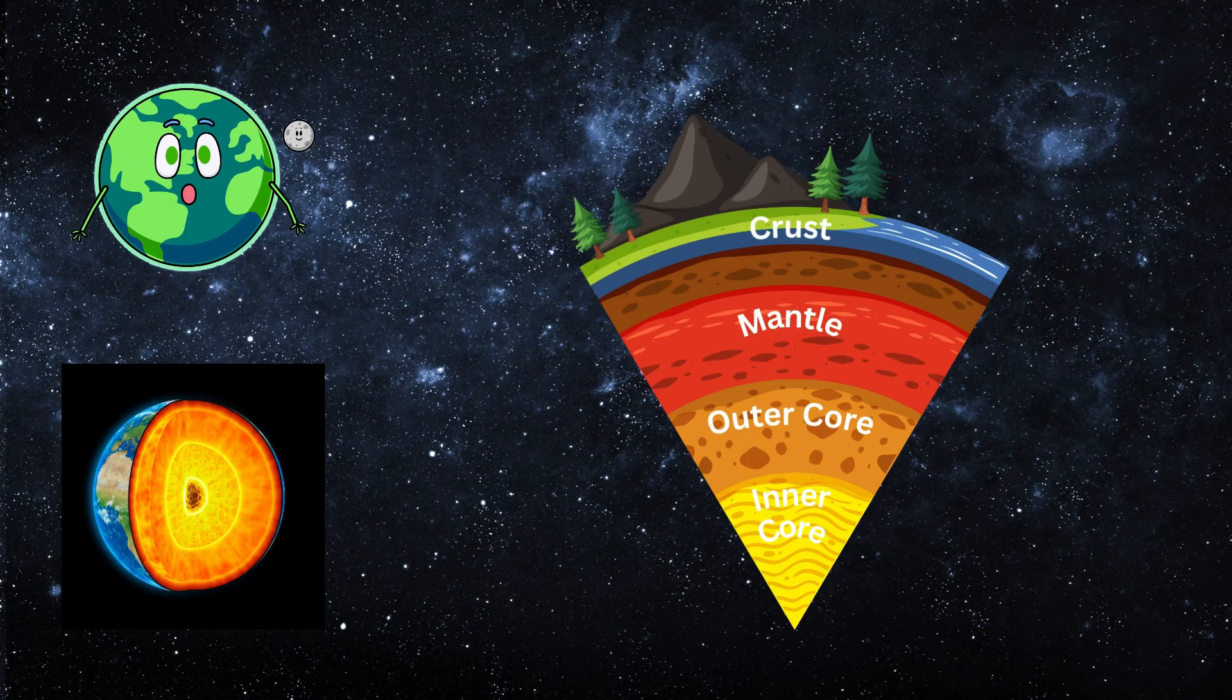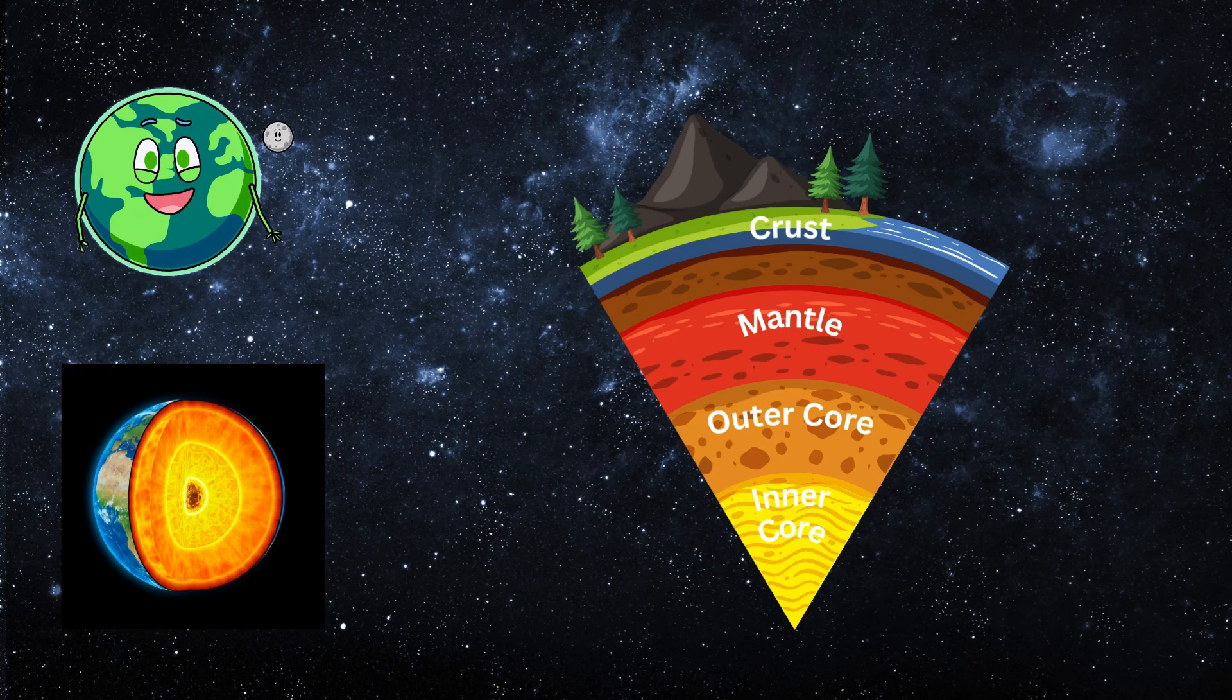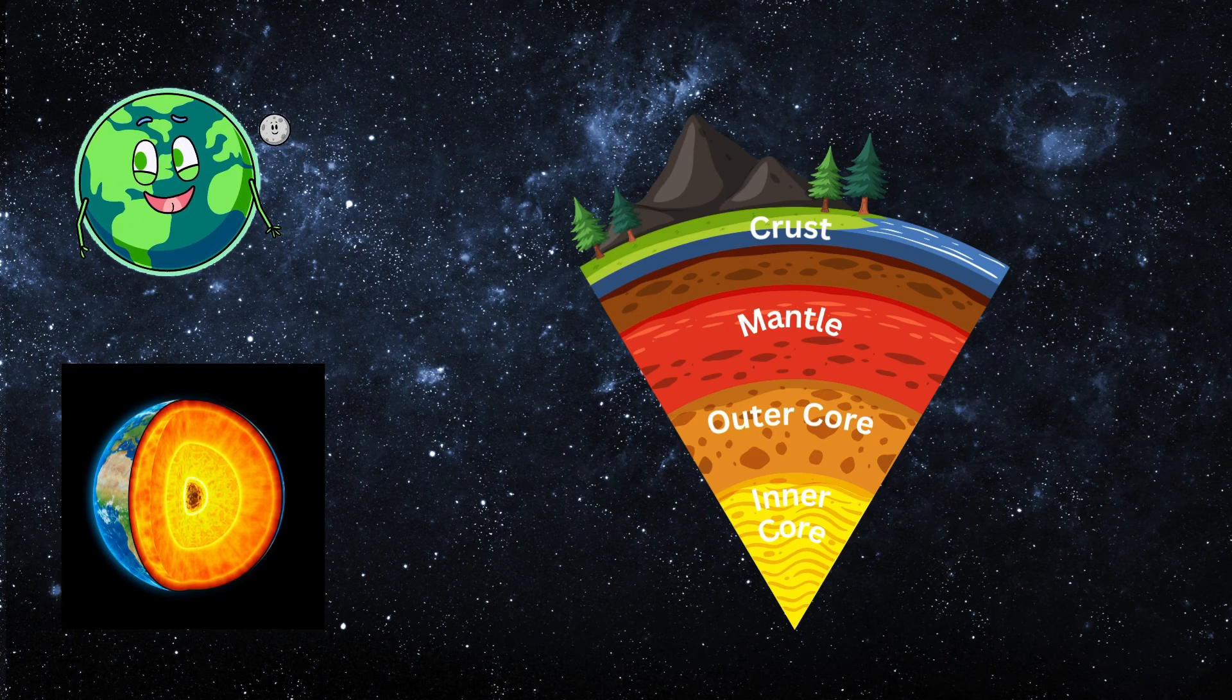The outer core is full of molten metal, swirling around, and the inner core is a super-hot ball of solid metal at Earth's heart.